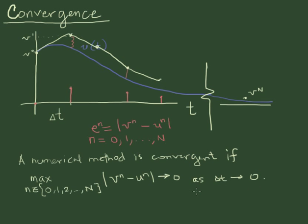So this part here, you can think of this as the worst case error over all of the time steps. And if this goes to 0, if the worst case error is going to 0, that means that this is going to imply that vn is going to tend to un for all n. And that's what convergence means.